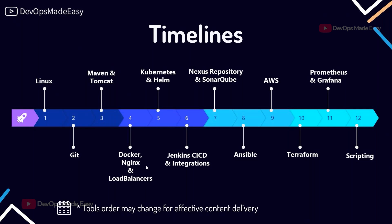The training timeline starts with Linux, then Git, then Maven and Tomcat, then Docker and Nginx load balancers, then Kubernetes and Helm, then Jenkins with all its integrations. Nexus and SonarQube are covered in parallel with Jenkins since they need to be integrated. After that comes Ansible, AWS, Terraform, Prometheus, Grafana, and shell scripting.